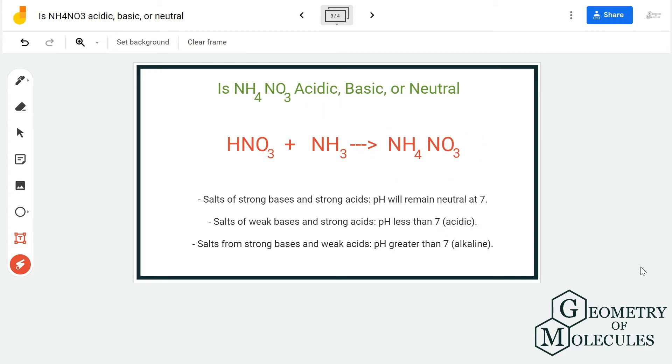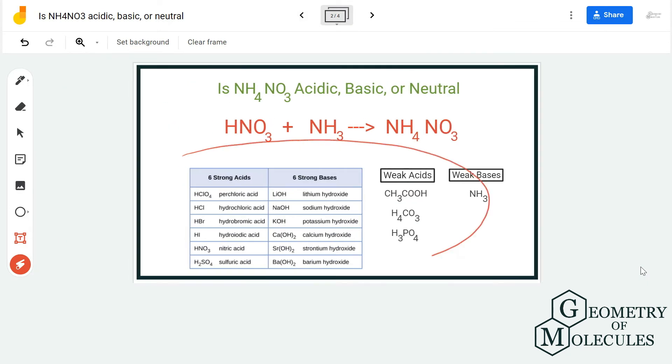You can use this table to refer the other compounds and to check if the pH of their compounds is less than 7, 7, or more than 7.